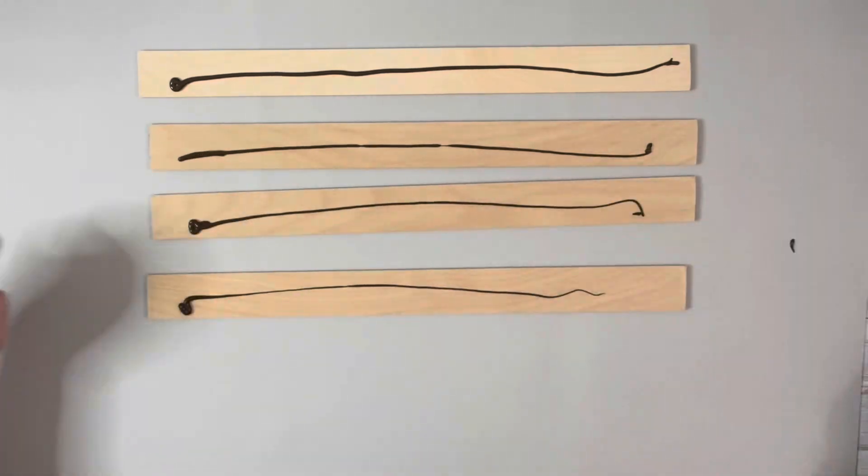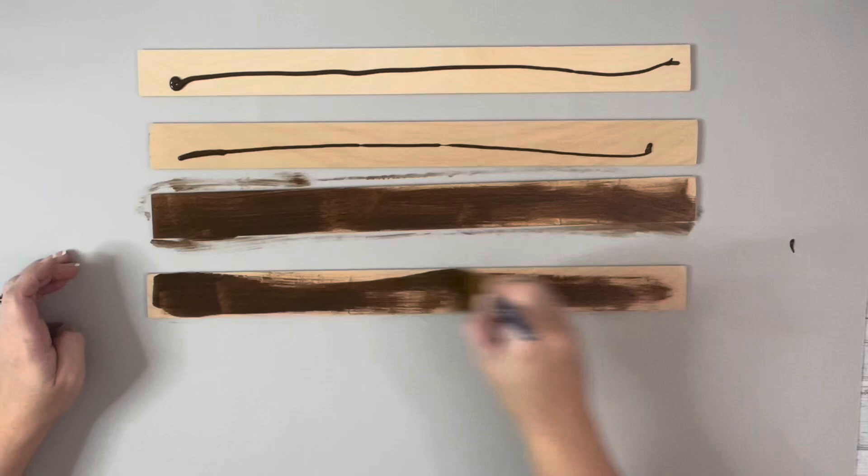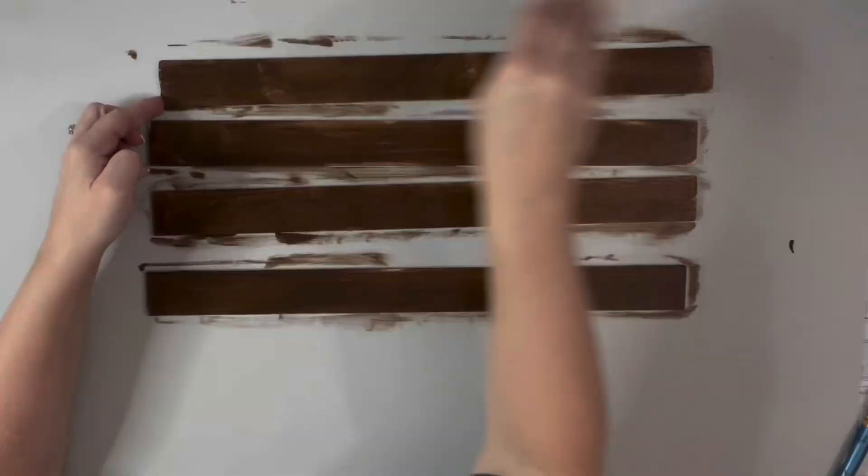Once I had them cut down, I applied the Gel Stain in Walnut, brushed it on, then blended it with a baby wipe, and I covered those entirely.